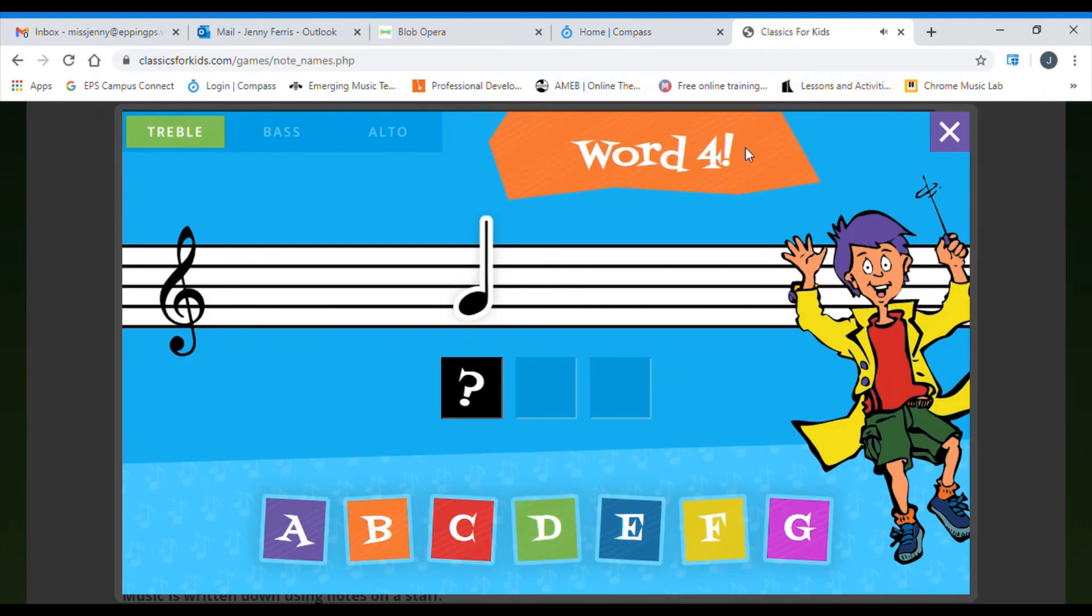You can see that up the top, it's keeping track of how many words we've done. After you have completed ten words correctly, there will be a congratulations screen. What you need to do is take a snapshot of that congratulations screen and post it to Seesaw.